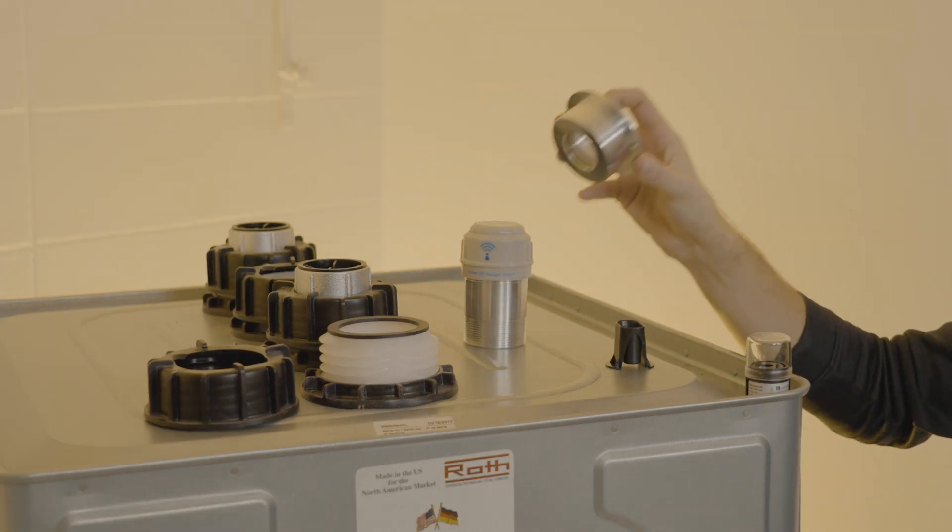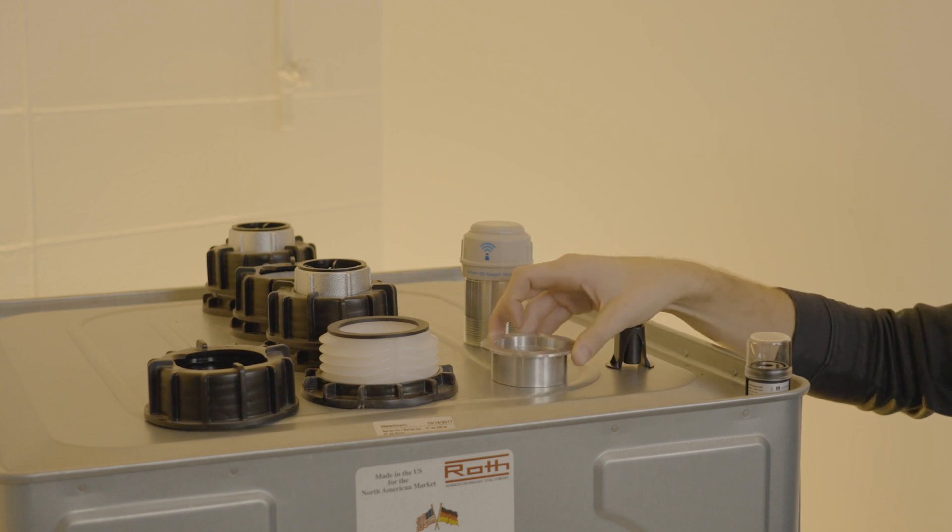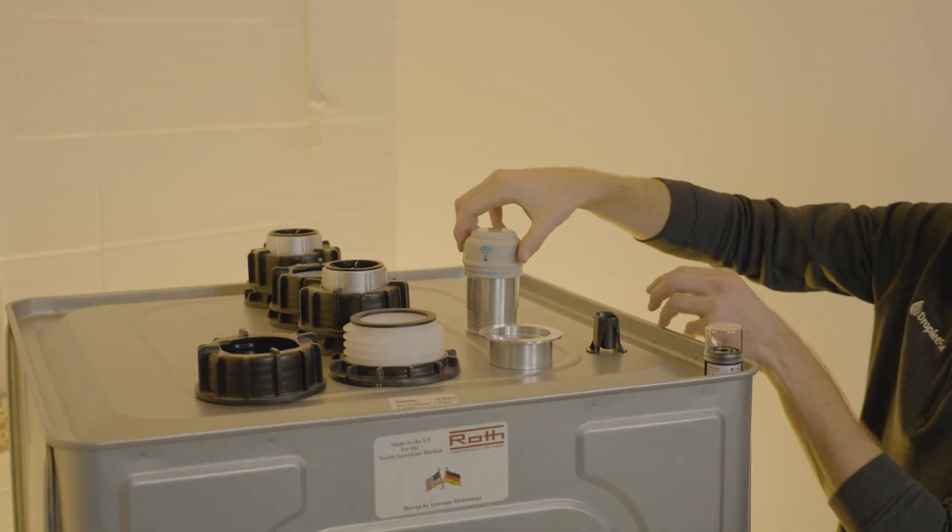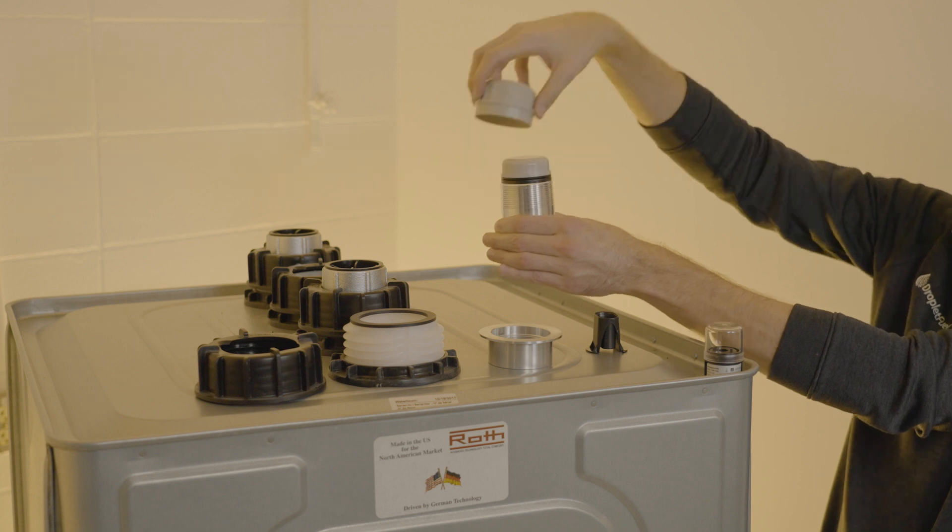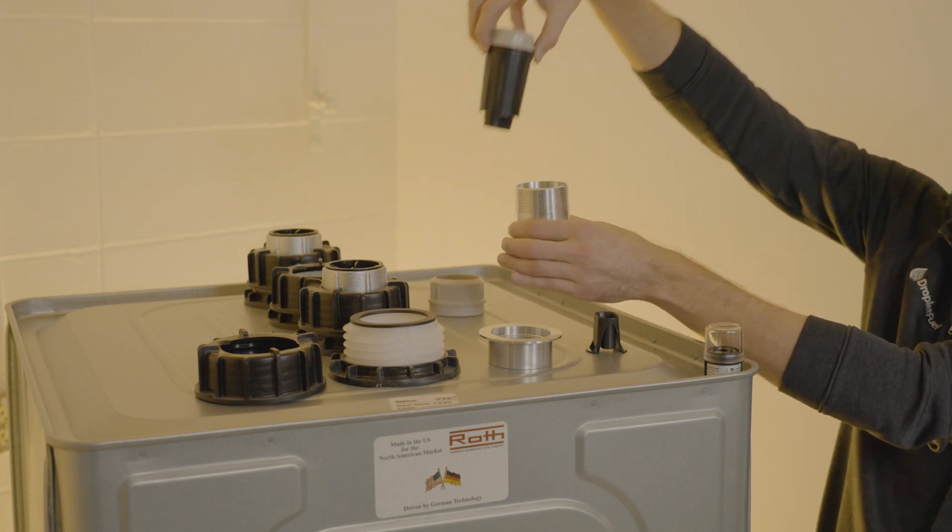Next you'll want to make sure you purchase our Roth tank adapter and if you have a smart oil gauge duo like we're showing here you're going to want to disassemble the unit, take the entire internal assembly out of the body.